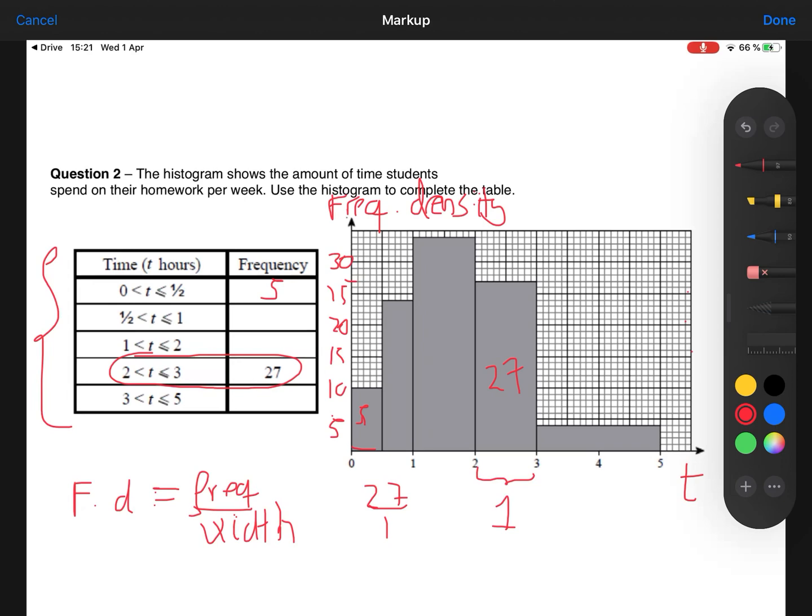The next bar also has a width of 0.5. But the height is actually 20, 21, 24. So the area of that bar is the height of 24 times the base, which is 0.5, is 12. So there were 12 people there.